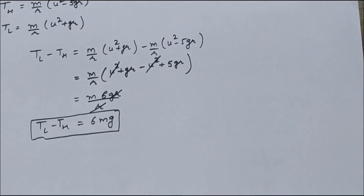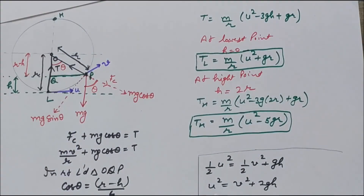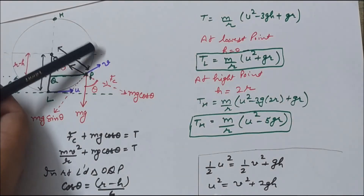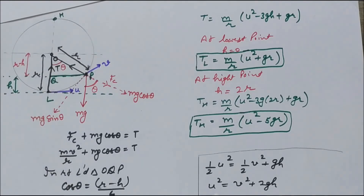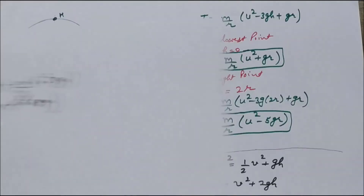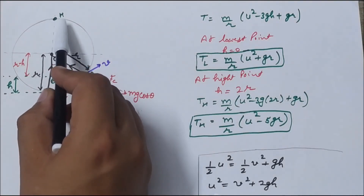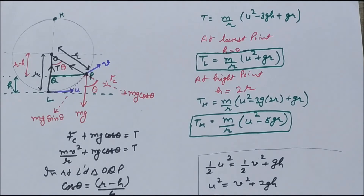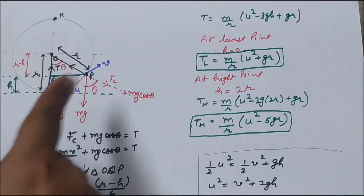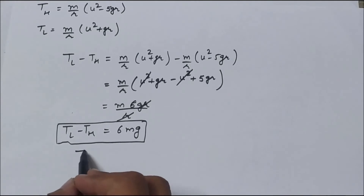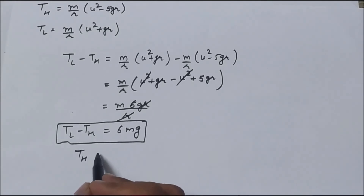If the tension is positive then the particle will follow the circular path. If the value of T becomes 0 or negative, then it can follow any path. As we go upward, the value of tension starts reducing. At the lowermost point the tension in the string will be maximum. If the particle is executing motion in a vertical circle, then at the highest point H the tension should be greater than or equal to 0; otherwise the particle will fall down and not move in a circular path. So T_H must be greater than or equal to 0.